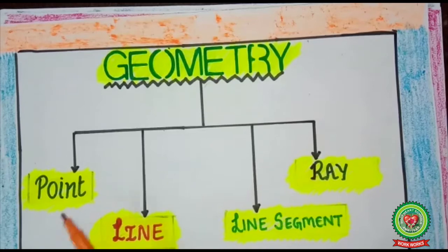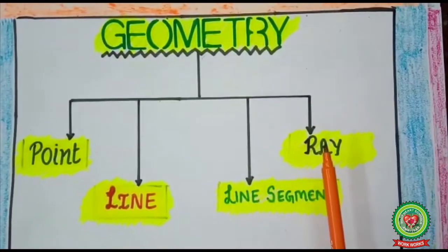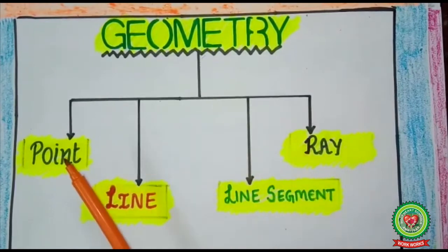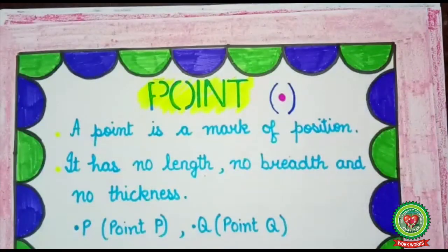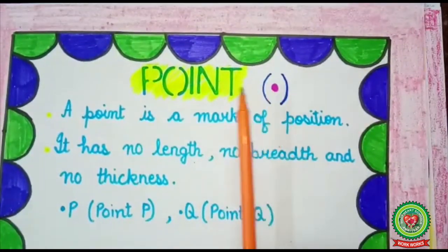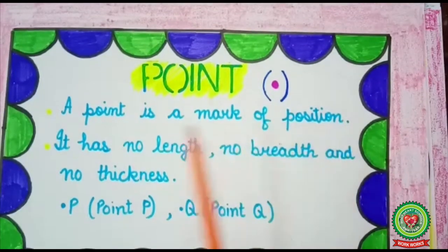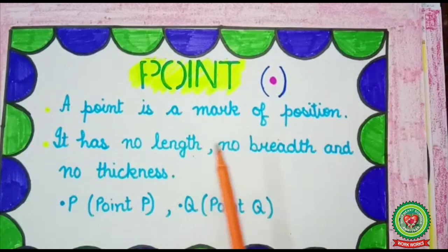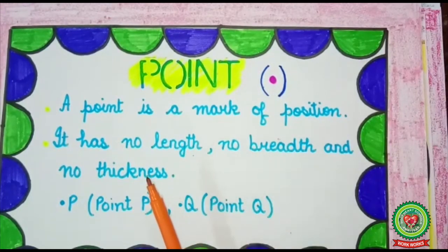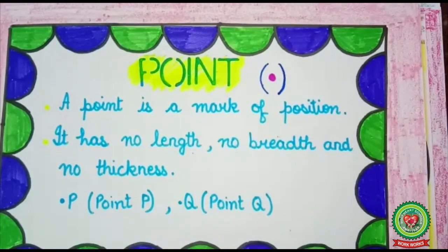In this chapter we will learn about the fundamental concepts of geometry such as point, line, line segment, and ray. Let's start with the point. A fine dot marked by a sharp-edged pencil is known as a point. A point is a mark of position — it has no length, no breadth, and no thickness. We denote a point by a capital letter: A, B, P, Q, etc.